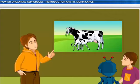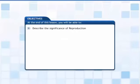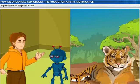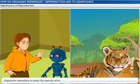It's because of reproduction that you see millions of organisms of the same type. In this lesson, you will learn about the significance of reproduction. At the end of this lesson, you will be able to describe the significance of reproduction. Organisms reproduce to keep the species alive.